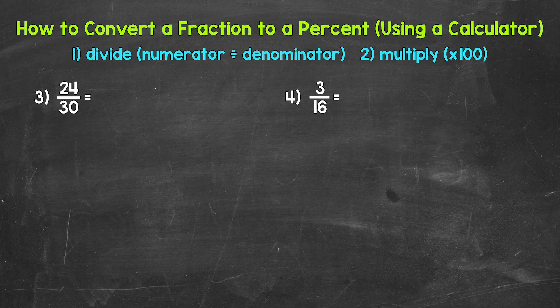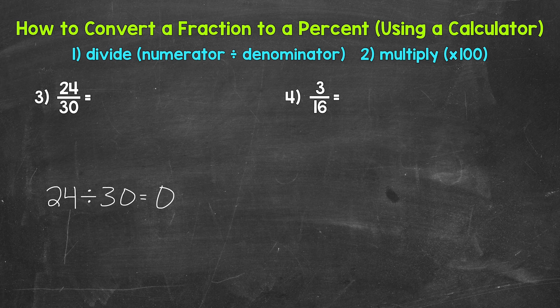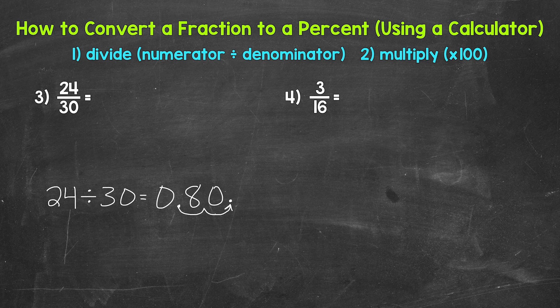Here are numbers three and four. Let's jump into number three, where we have 24 thirtieths. We need to start by dividing the numerator by the denominator — 24 divided by 30. So we plug in 24 divided by 30, which gives us 0.8. So that's 24 thirtieths as a decimal. Now we need to convert that decimal to a percent by multiplying it by 100 — we can do this by moving the decimal twice to the right. Once, twice to the right. We can fill this gap with a zero. This gives us 80%. So 24 thirtieths equals 80%.